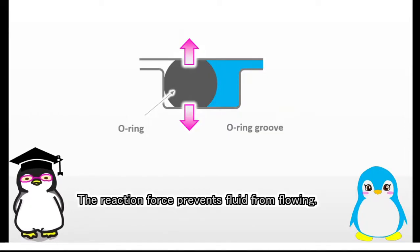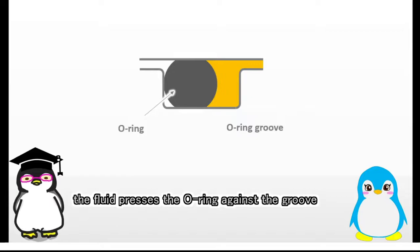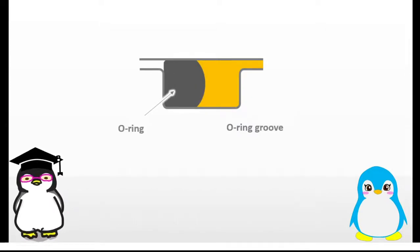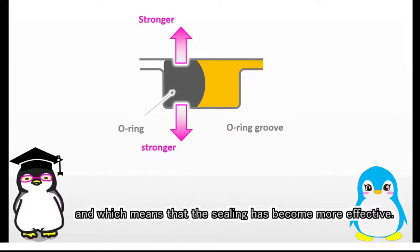The reaction force prevents fluid from flowing. When the pressure of the fluid goes up, the fluid presses the O-ring against the groove, and then the O-ring is deformed more. That makes the reaction force stronger, and which means that the sealing has become more effective.